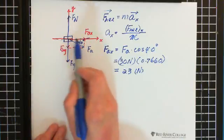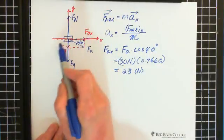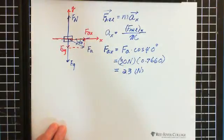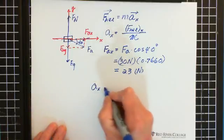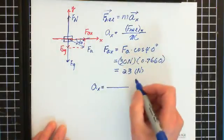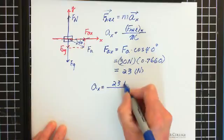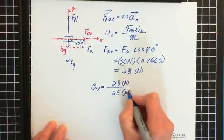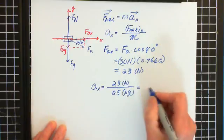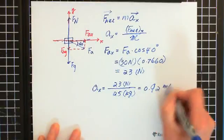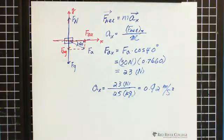Because only one force acts horizontally — ignoring friction — FAx is the net force on horizontal. That's why we can find the acceleration: net force on x is FAx, which is 23 Newtons, divided by mass which is 25 kilograms. We get 0.92 meters per second squared. This is the answer to part a.